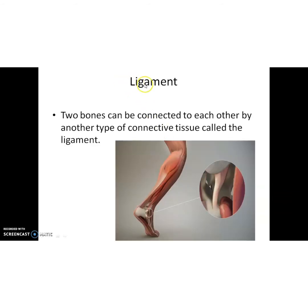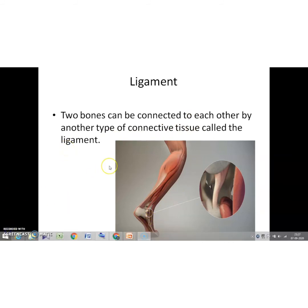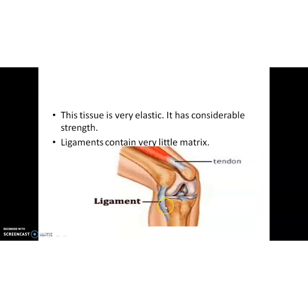The third example is ligament. Two bones can be connected to each other by a connective tissue called ligament. You might have heard about ligament fractures. Ligament is a connective tissue that connects two bones. This tissue is very elastic, has considerable strength, and contains very little matrix.